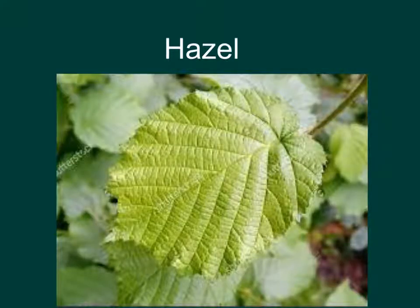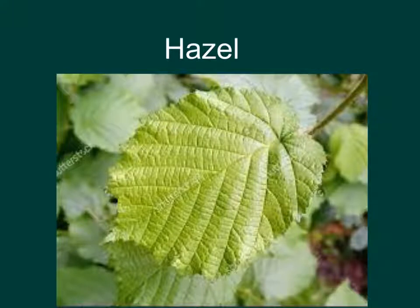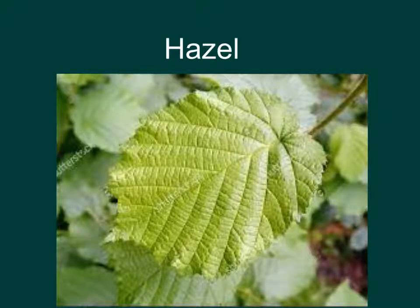Hazel is a common Irish tree. You can see in the picture it has a very round type of leaf with some jagged points on the leaf itself. It also has a little point at the tip of the leaf which is very distinctive, and they tend to be a very round type of leaf. The tree itself grows into rods which are often used in basket making.